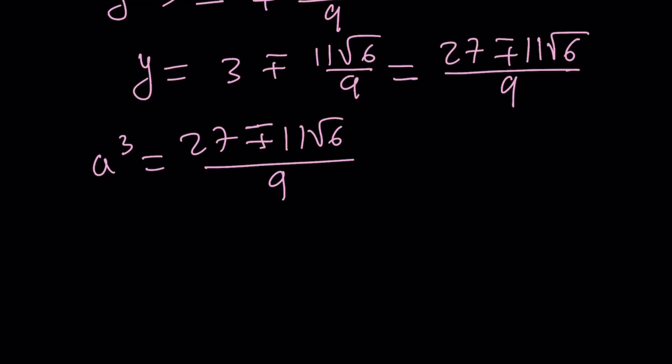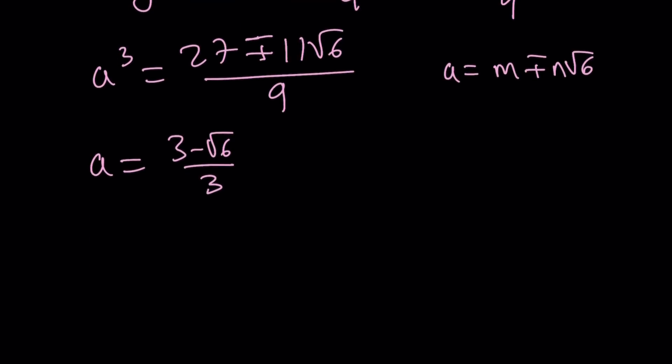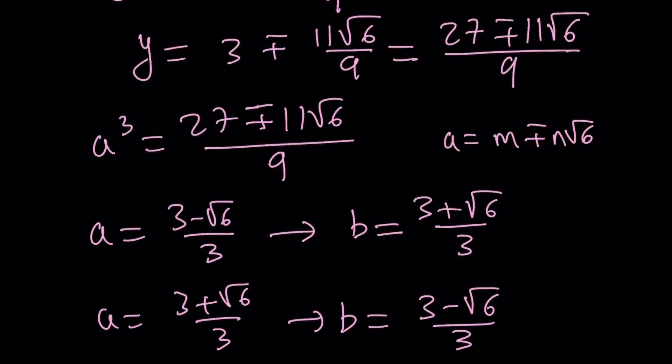And then cube it and set it equal to a³. And from there, you can find m and n because m and n are rational in this case. Anyways, to keep a long story short, from here, a is either 3 minus root 6 over 3 or 3 plus root 6 over 3. Because of the plus minus, there are two solutions. If a is 3 minus root 6 over 3, then b becomes 3 plus root 6 over 3. And in the second case, it becomes the other way around. So it's like they're conjugates. A and b are conjugates.